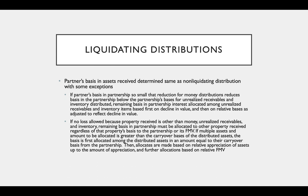What this is saying is: if as a partner I receive a liquidating distribution and my basis in the partnership is so small that — after I reduce that basis by money — whatever is left I allocate to receivables and inventory, and then whatever is left I allocate to other property. But in this situation, if the basis is so small that the amount to allocate to unrealized receivables and inventory is below the partnership's basis in those assets, we allocate first based on the decline in value and then on the relative adjusted basis between the two.